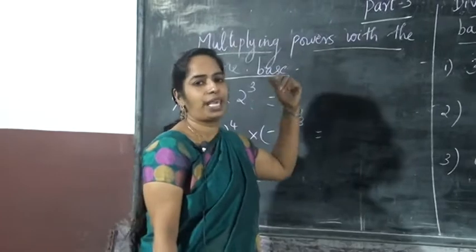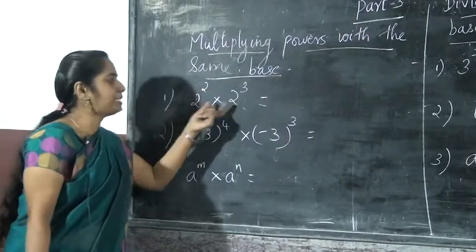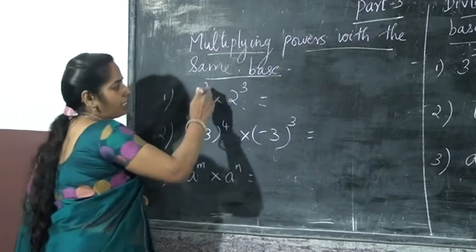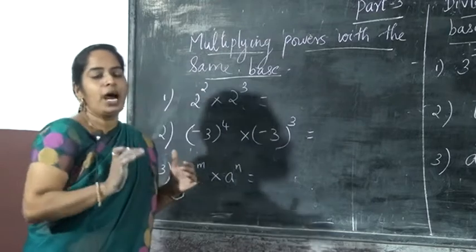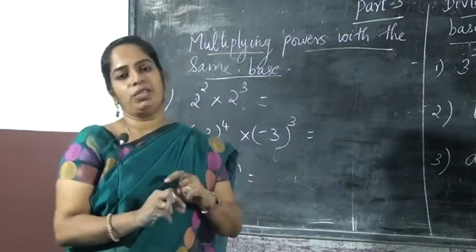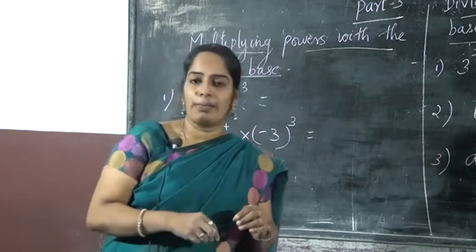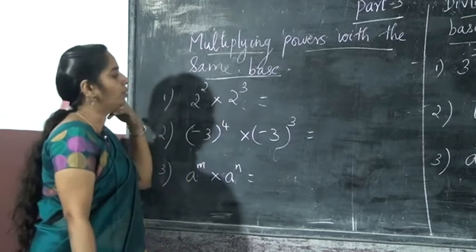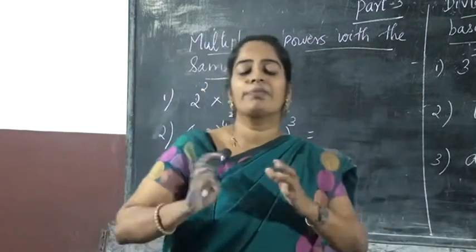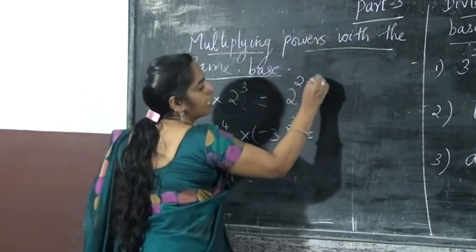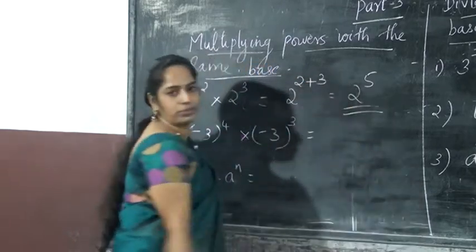Multiplying powers with the same base. Here we look — the same base is there. We can add the powers. 2 is there, 2 is there — this is the power here. Same base is there, not different numbers. Here the same numbers are there, so 2 is the base here. Powers are different here. So how will you do that? If the same base is there, we can add the powers. We are adding the powers: 2 plus 3, that is equal to 2 raise to 5.